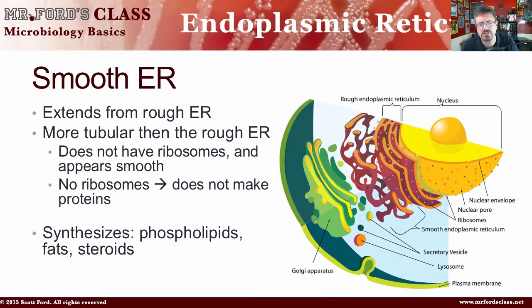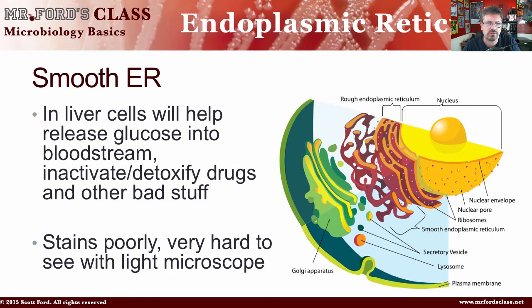If ribosomes give rough ER its name, what do you think is missing in smooth ER? Smooth ER is smooth because it lacks ribosomes. And if it lacks ribosomes, then it doesn't deal with protein. Smooth ER extends from the rough ER. It's more tubular than the rough ER, does not have ribosomes, and appears smooth. It's going to synthesize phospholipids, fats, and steroids. In liver cells, it will help release glucose into the bloodstream. It's also going to help inactivate or detoxify drugs and other harmful substances. And it stains poorly, so it's very hard to see with a light microscope.